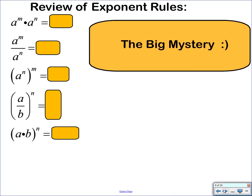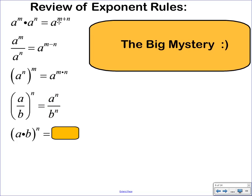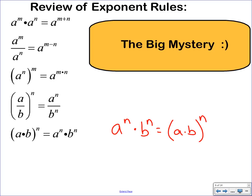Now some review of the rules of exponents. Same base and multiplying: add the exponents. Same base and dividing: subtract the exponents. Power to a power: multiply the exponents. When dividing with a power outside, you can distribute that power. Also, if you have a to the n times b to the n, you can combine them: that equals (a times b) all to the n power. We'll be using that reverse direction a lot.